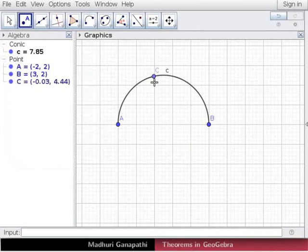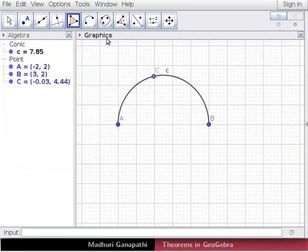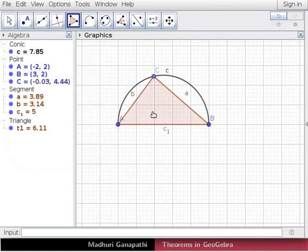Now let us draw a triangle ABC using the points on the semicircle. Click on the polygon tool and draw the triangle ABC. Here we are using semicircle to draw the triangle. This is because we need the measure of one of the angles to be 90 degrees.